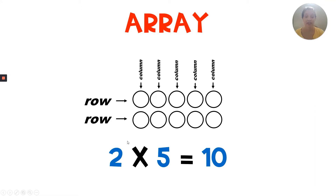So we can say that there are two rows of five in each row. And if we count all of the circles in our array, we should get our product, which is 10. So two times five equals 10.